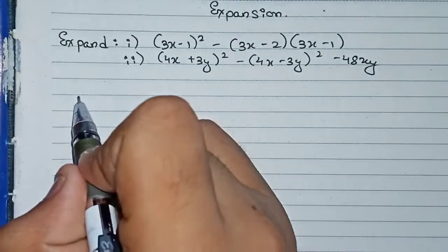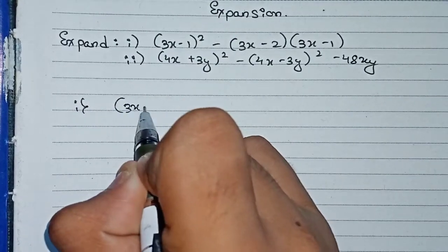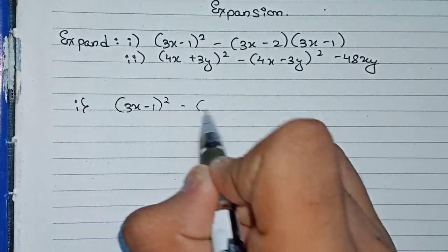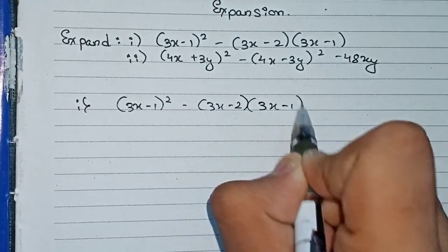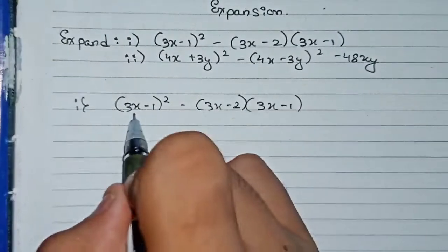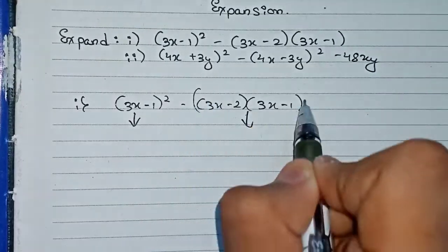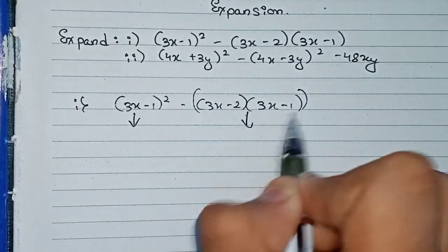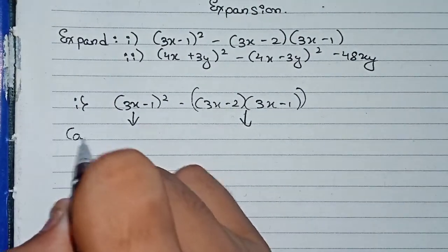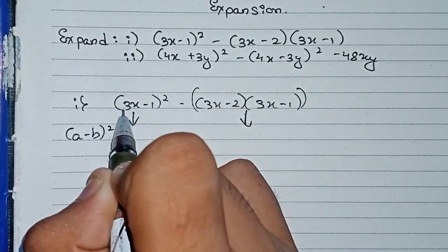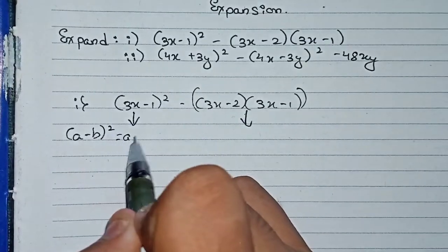We start with question number one, which says: (3x-1)² minus (3x-2)(3x-1). For this first portion we will use one identity, and for the second portion we will use another identity. For the first portion, our identity will be (a-b)², where 3x will be a and 1 will be b.